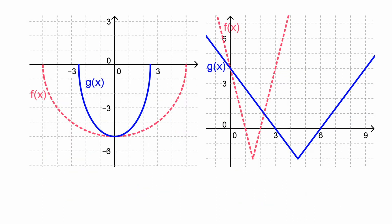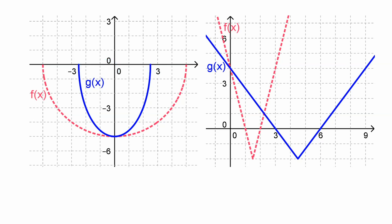In the third example, the width looks different but the height does not, and there's an invariant point suggesting a horizontal change. The graph looks about 10 units wide originally and now looks 5 units wide. Checking points: x = 4 becomes x = 2. So this has been horizontally compressed by a factor of one-half.